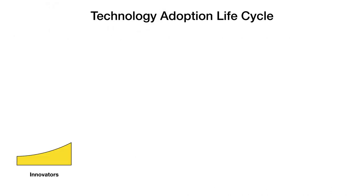The first group that we're going to look at — remember, these are groups of people — is the innovators. These might also be termed the techies. These are the folks that are always playing with new technology; they're on the bleeding edge. They like technology or new ways of thinking just for technology's sake.